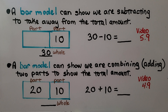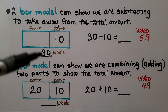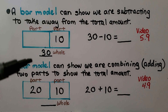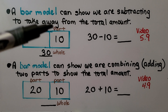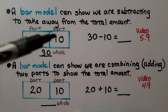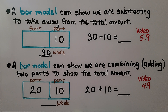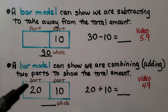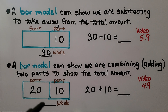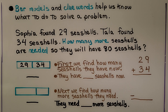In video 5.9 we learned about bar models. A bar model can show we are subtracting to take away from the total amount — we look at 30 as the whole amount, with a missing part and another part, and we break apart the 30 to find the missing part. In 4.9 we learned a bar model can show we are combining — that's adding two parts to show a total amount, where we have a part and another part and combine them to get the sum, which is the whole. Bar models and clue words help us know what to do to solve a problem.